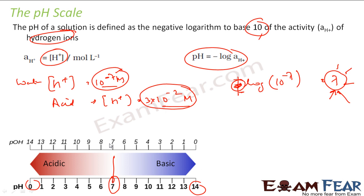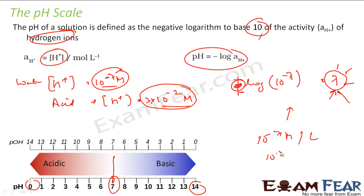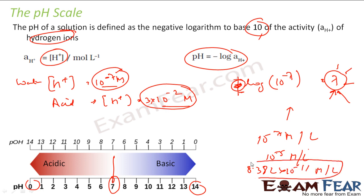Just understand that pH is nothing but just one representation. Normally the concentration is in terms of 10 to the power minus 7 moles per liter, 10 to the power minus 5 moles per liter, or something like 8.382 into 10 to the power minus 11 moles per liter. These are very complex to represent. So instead of that, what they do is find the minus log of this value, and that gives a very simple number - maybe 7, 8, or 9. That way it is easy to communicate.